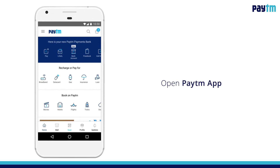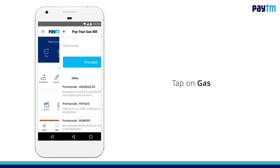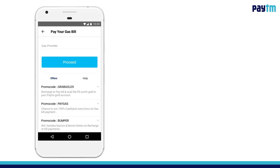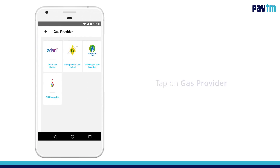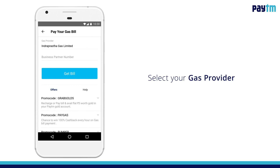Open the Paytm app. Under Recharge or Pay, tap on Gas. For first-time bill payment, tap on Gas Provider. You'll see a list of gas providers — select the gas provider you want to pay the bill for.